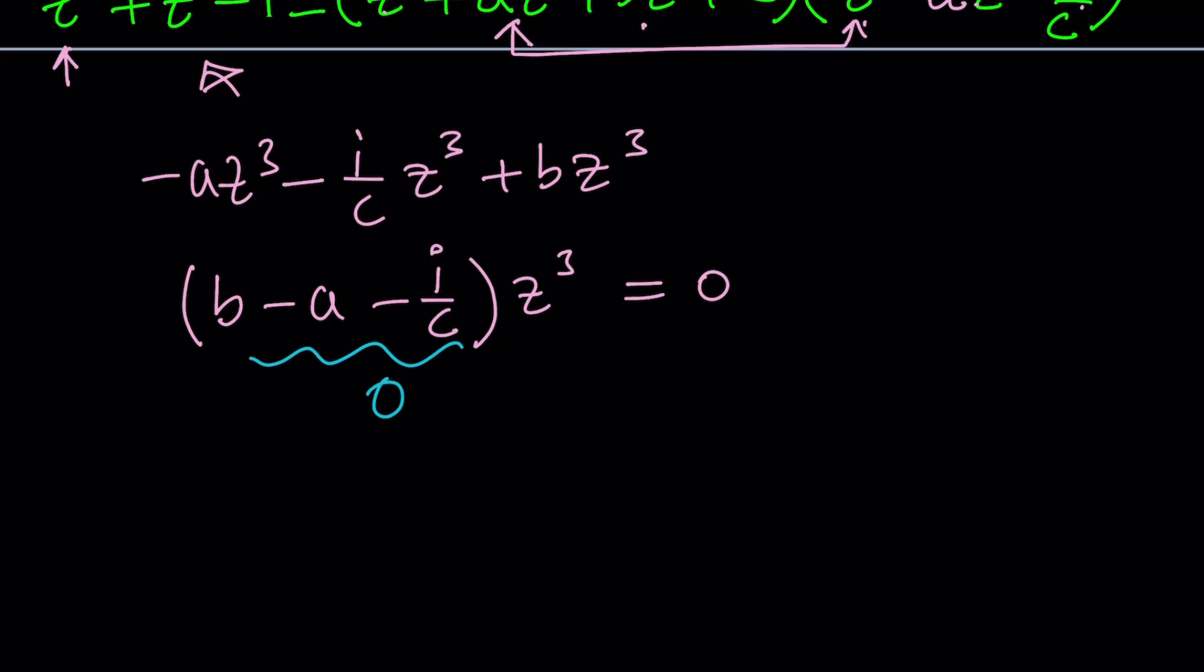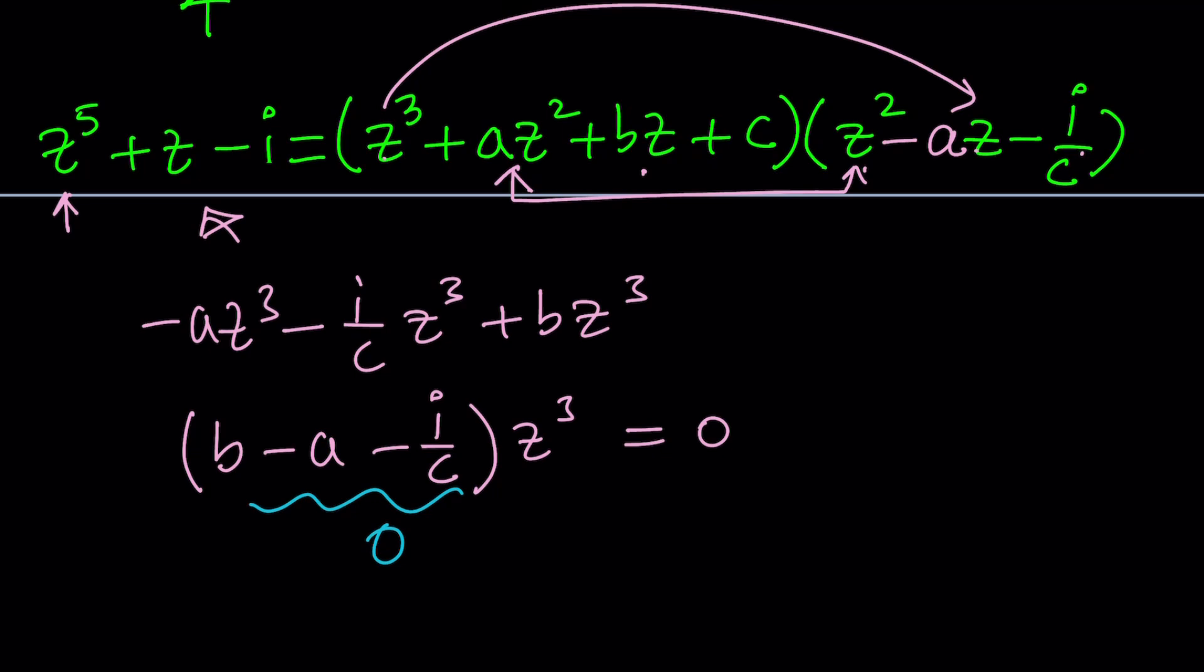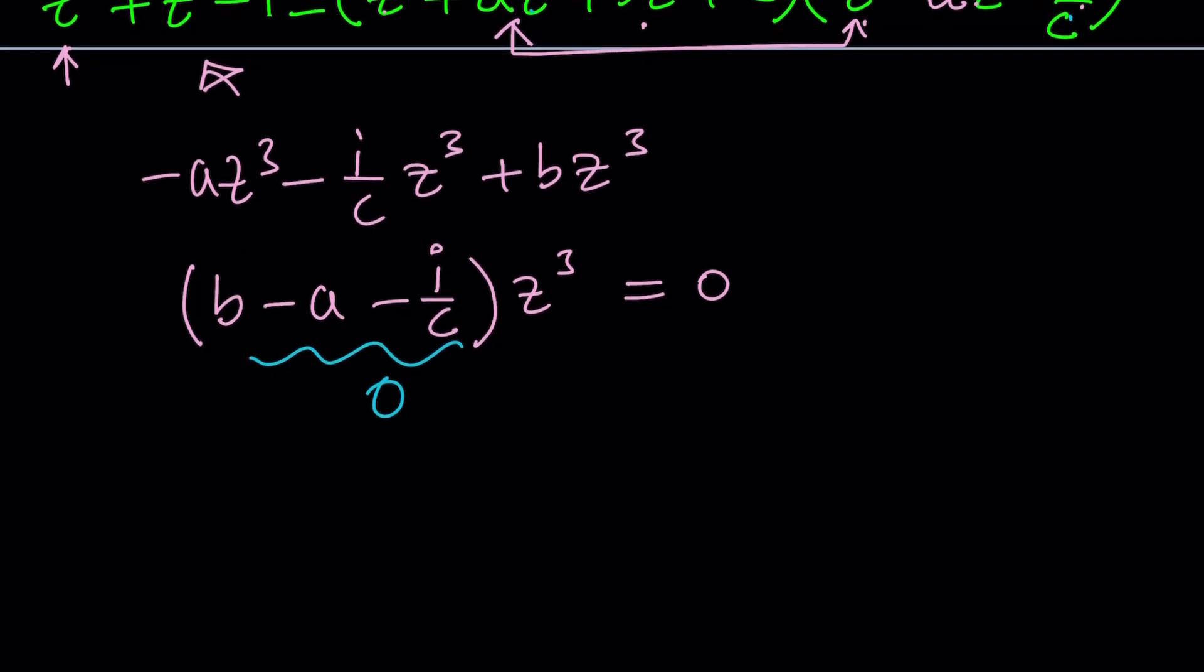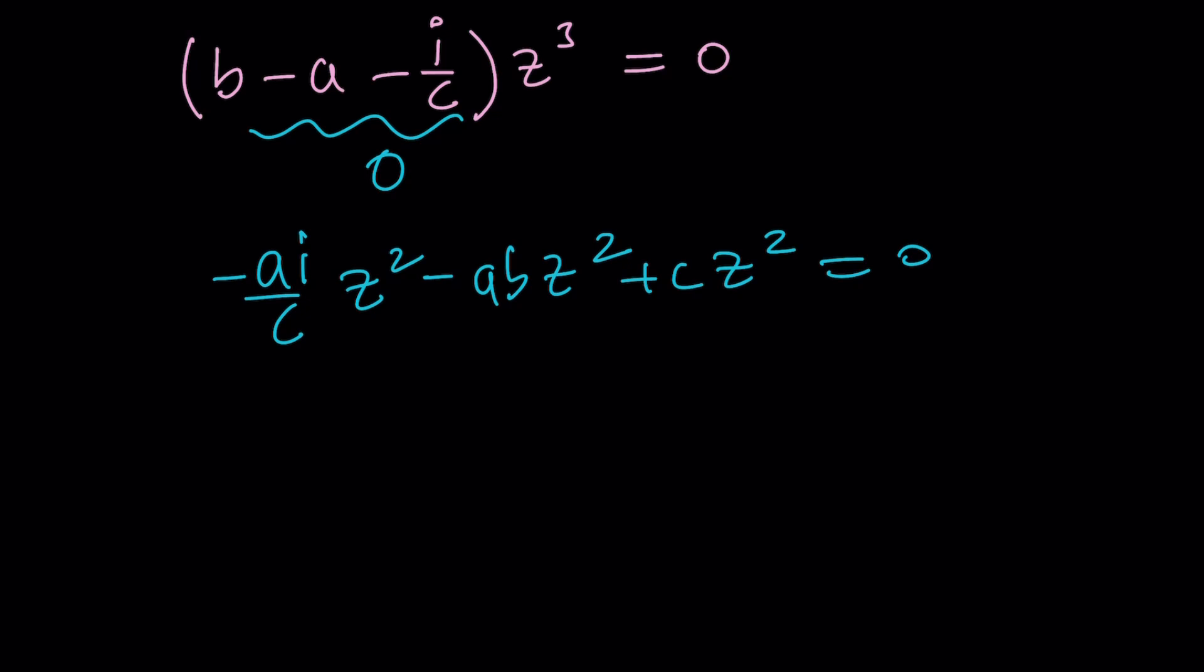And for the z squared, obviously we're going to get something similar. If you multiply Az squared by negative i over C, you're going to get negative Ai over C times z squared. And then I have more z squared. If we continue to do that, we're going to be getting Bz and negative Az, negative ABz squared. And finally, C times z squared is going to give me Cz squared. This is also zero, which means the coefficient of z squared is zero, which means C minus AB minus Ai over C all multiply by z squared equals zero, which indicates that this whole thing is equal to zero. That gives us another equation.